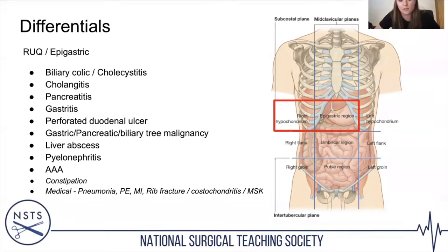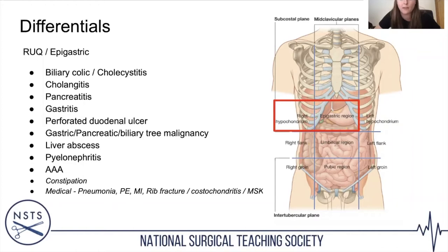Don't forget referred pain from the back — pyelonephritis — and always think about AAA in generalised abdominal pain; it's a differential you do not want to miss. Rarer causes of upper abdominal pain include constipation (the transverse colon stretching), and medical causes such as basal pneumonia, PE, MI, type 2 diabetes presenting with epigastric pain, rib fracture, costochondritis, and musculoskeletal pain.